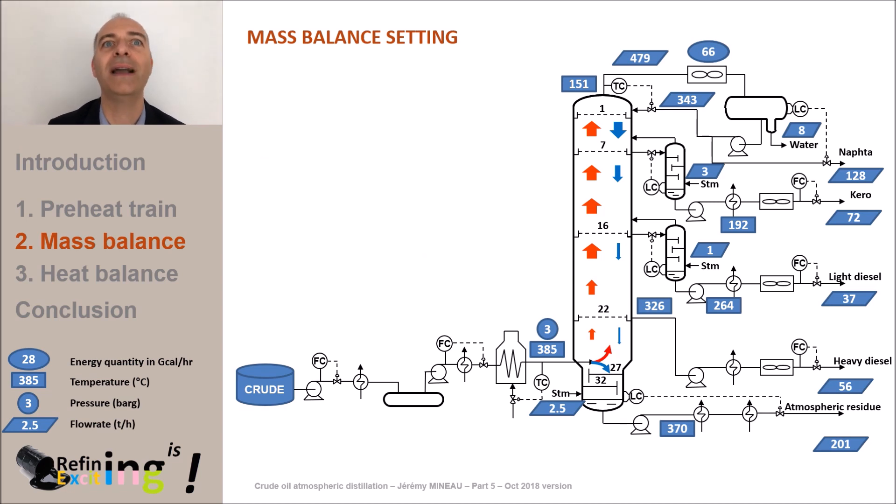It is now time to focus on the maximum rate of light diesel to be withdrawn from the tower. In the first video, we considered a cut point between light and heavy diesel of 300 degrees C. This is a fairly typical value and may be of interest in the case where the refinery routes light diesel and heavy diesel in two different hydro desulphorization units.